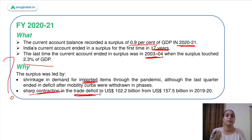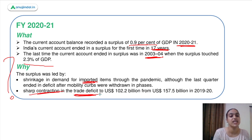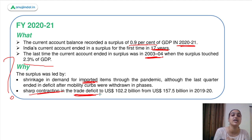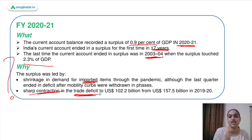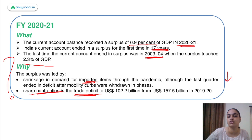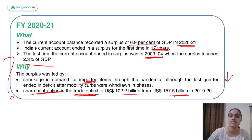As far as goods are concerned, the imports and exports were impacted because there was a shrinkage in demand for imports due to the pandemic. When imports fall, your trade deficit falls, and that fall was the major reason behind this surplus. So the pandemic-driven fall in imports reduced the trade deficit, which brought the current account into surplus for the full year.